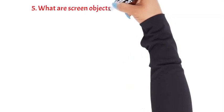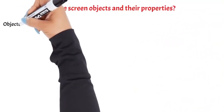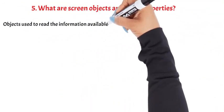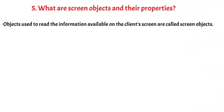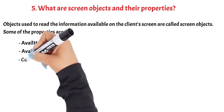Question 5: What are screen objects and their properties? Objects used to read the information available on the client's screen are called screen objects. Some of the properties are availHeight, availWidth, and colorDepth.